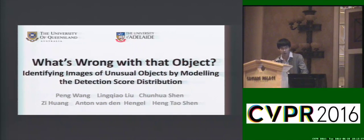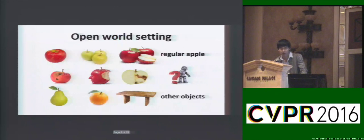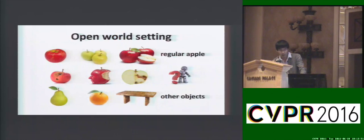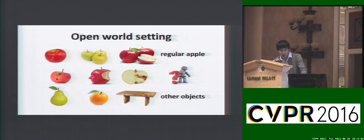Hello everyone. In this work, we are going to address the problem of identifying images of unusual objects, which are defined as instances of an object but not typical of that object. In particular, we address this problem in an open world setting — that is, we aim to distinguish unusual object images from not only regular images of this object, but images from other objects.